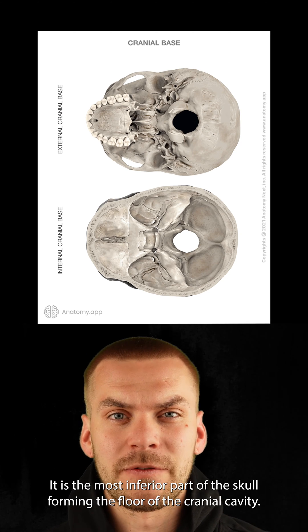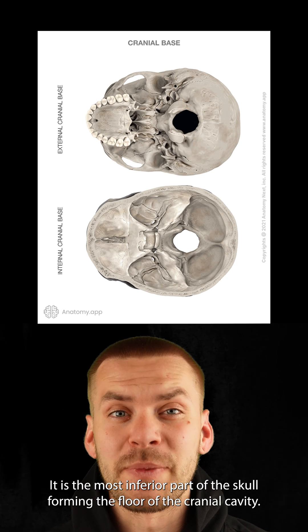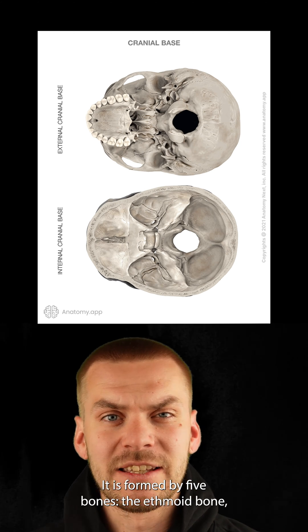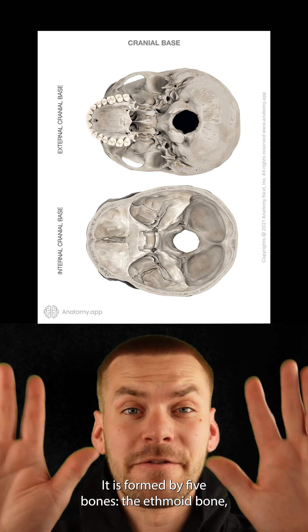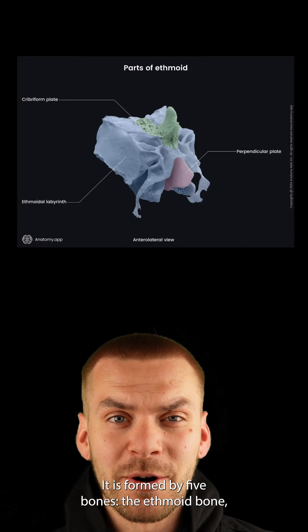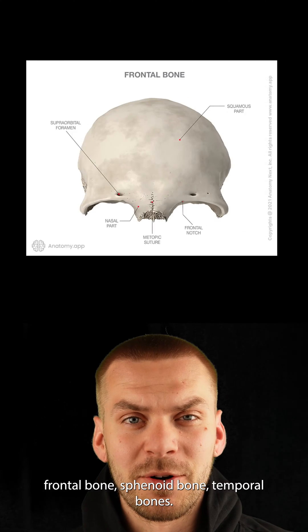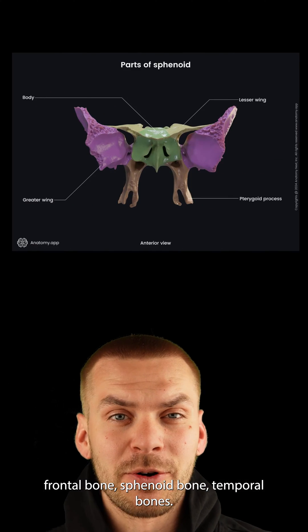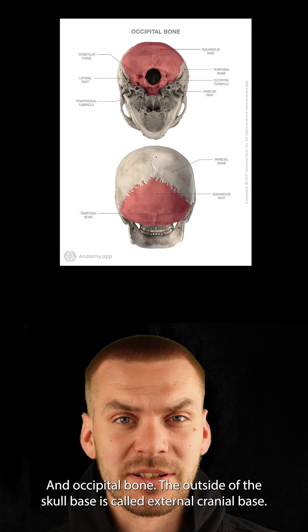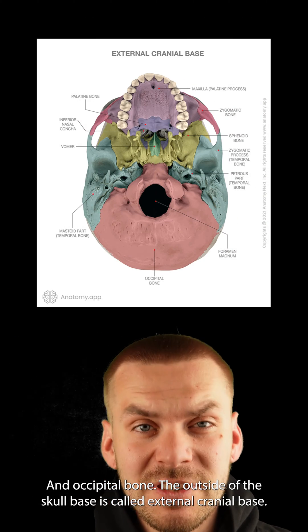It is the most inferior part of the skull forming the floor of the cranial cavity. It is formed by five bones: the ethmoid bone, frontal bone, sphenoid bone, temporal bones, and occipital bone.